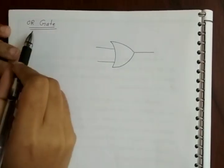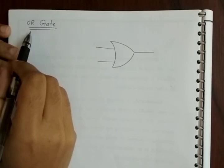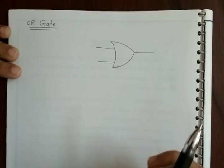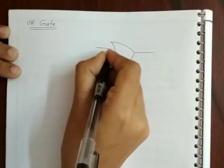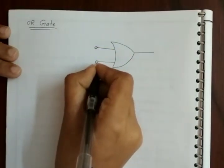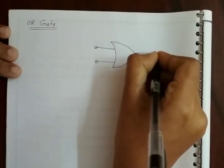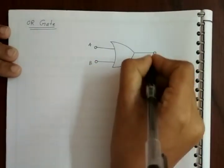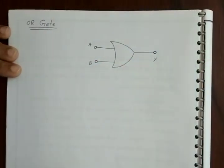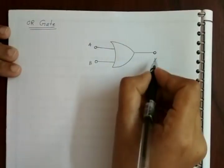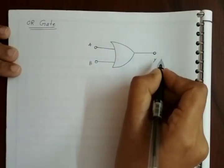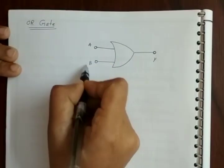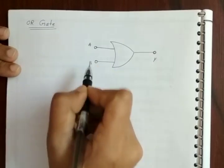First of all we will be discussing about the OR gate. An OR gate is represented in a specific shape and has two inputs and one output. We usually give A and B as inputs and Y is taken as the output. For an OR gate the output is 1, or the output is high, only when either of the inputs is 1 or both of them are 1.